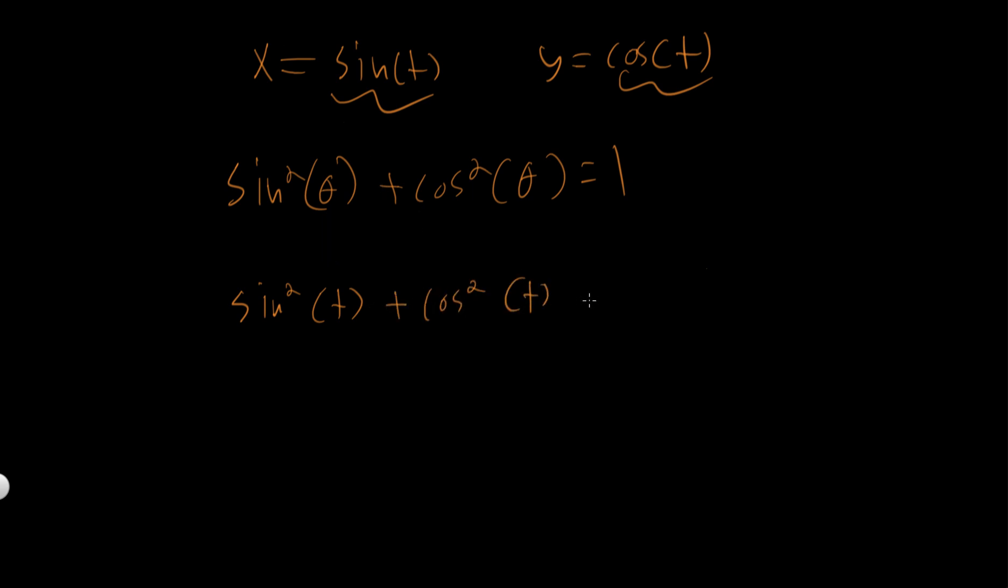Now in this case, sine squared of t we can derive that by squaring both sides of our parameter equation. So x squared is equal to sine squared of t. And same thing here, we can derive cosine squared of t by squaring both sides of this equation.